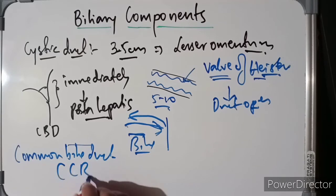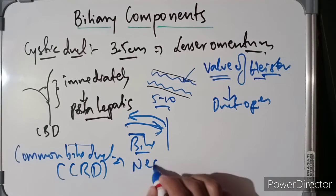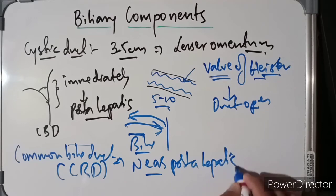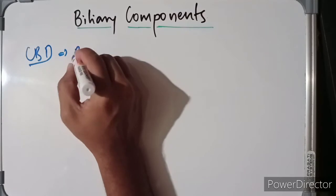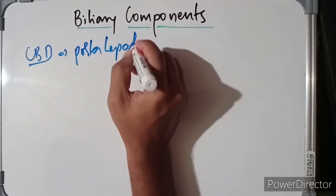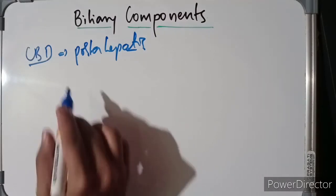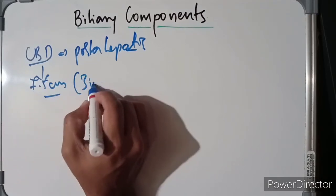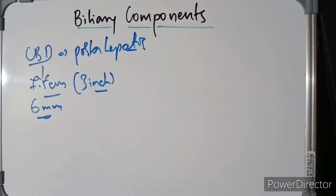The common bile duct, also known as the CBD, is formed near the porta hepatis by the union of the cystic duct and the common hepatic duct. Its length is up to 7.5 centimeters or 3 inches, and the diameter varies from 6 millimeters to 8 millimeters.